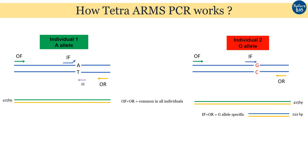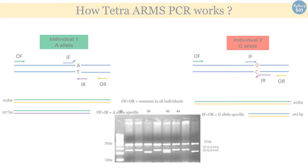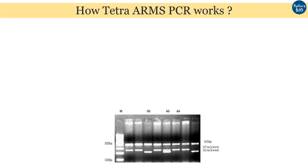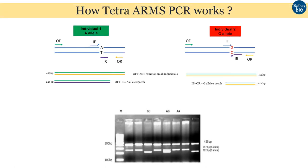On the other hand, the internal reverse primer anneals and amplifies in individual 1, producing an A allele-specific band along with the outer forward primer, but does not produce a band in individual 2. It should be kept in mind that the primers are to be designed in a manner that they produce fragments of different lengths to be distinguished on the gel. When the PCR products of both individuals are separated on an agarose gel, distinct bands are seen representing each specific allele.